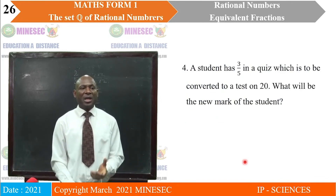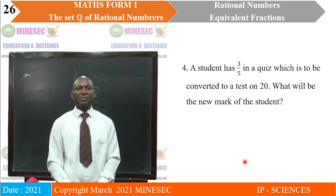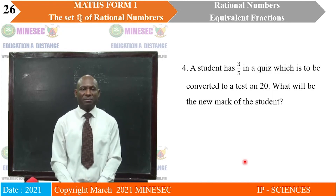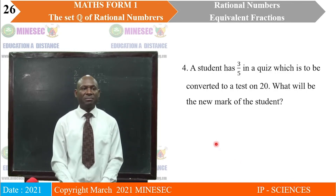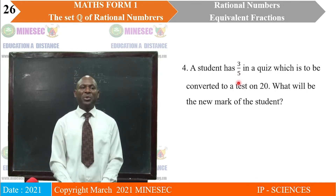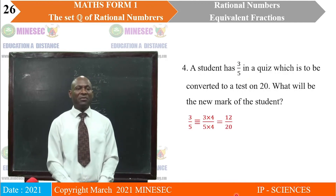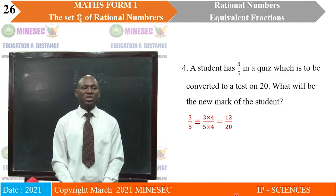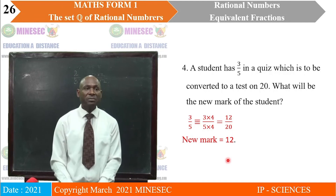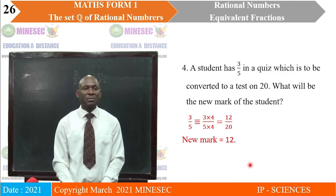Question four: a student has three-fifths in a quiz which is to be converted to a mark on twenty. What will be the new mark? Converting three-fifths to an equivalent fraction with denominator twenty requires multiplying five by four and three by four. So three on five equals 3 times 4 on 5 times 4, which gives twelve on twenty. So the student's new mark is twelve on twenty.